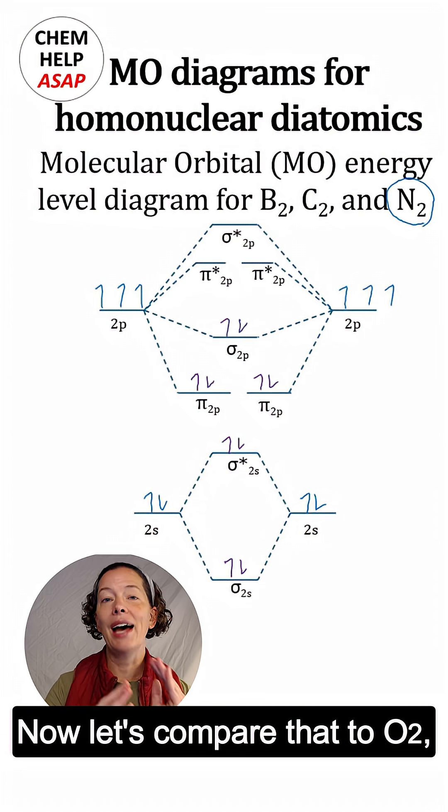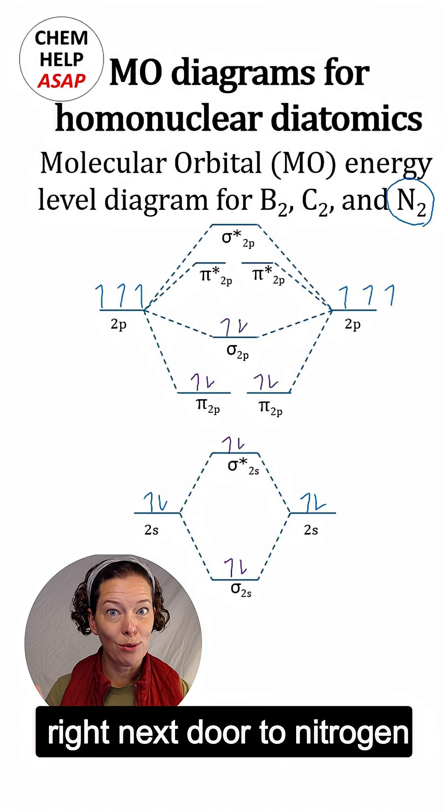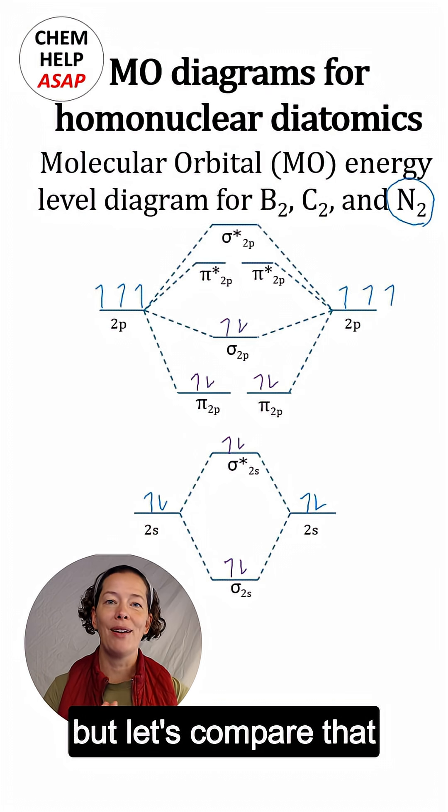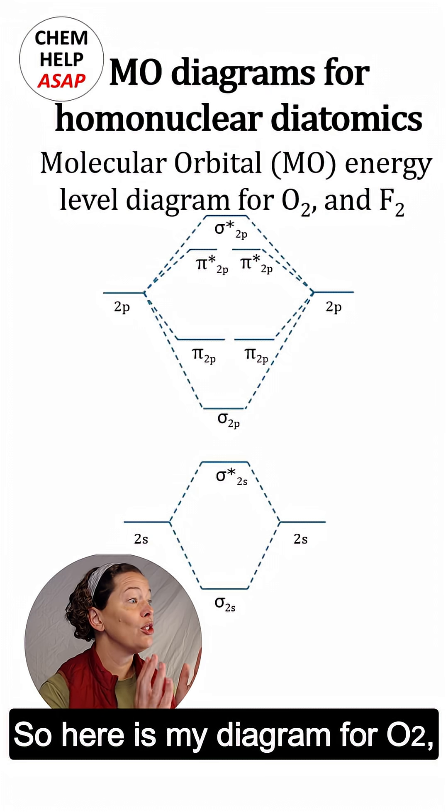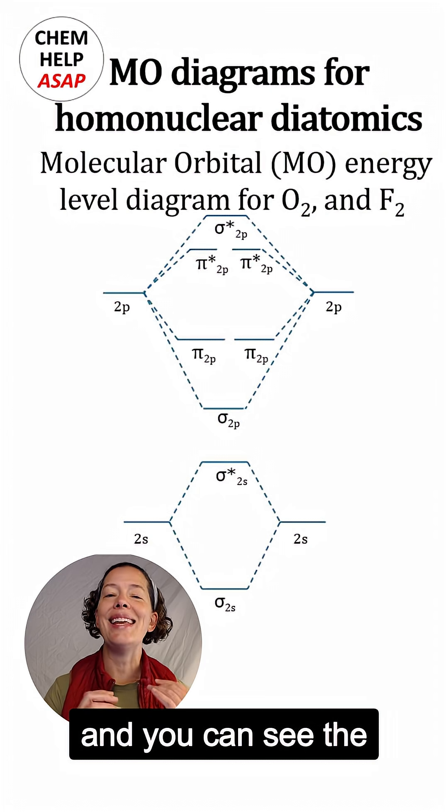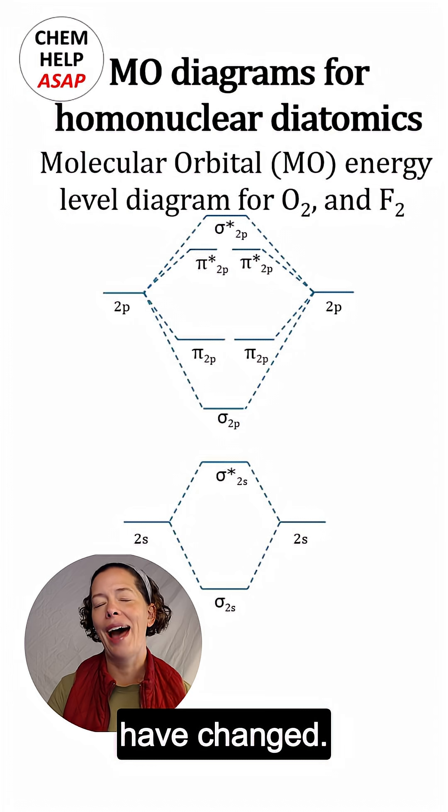Now let's compare that to O2, which of course is right next door to nitrogen. Let's compare that to the MOs for O2. Here is my diagram for O2, and you can see the energies of my MOs have changed.